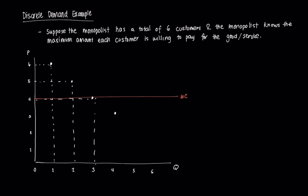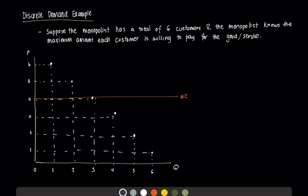The fourth consumer is willing to buy at three dollars, the fifth consumer at two dollars, and the last consumer at one dollar. So the demand curve follows the law of demand — as price increases, quantity demanded decreases. We now view the demand curve as the preference set of particular consumers: some willing to pay high prices for low quantities, others needing lower prices for more quantity. Connecting the points, the demand curve looks something like this.